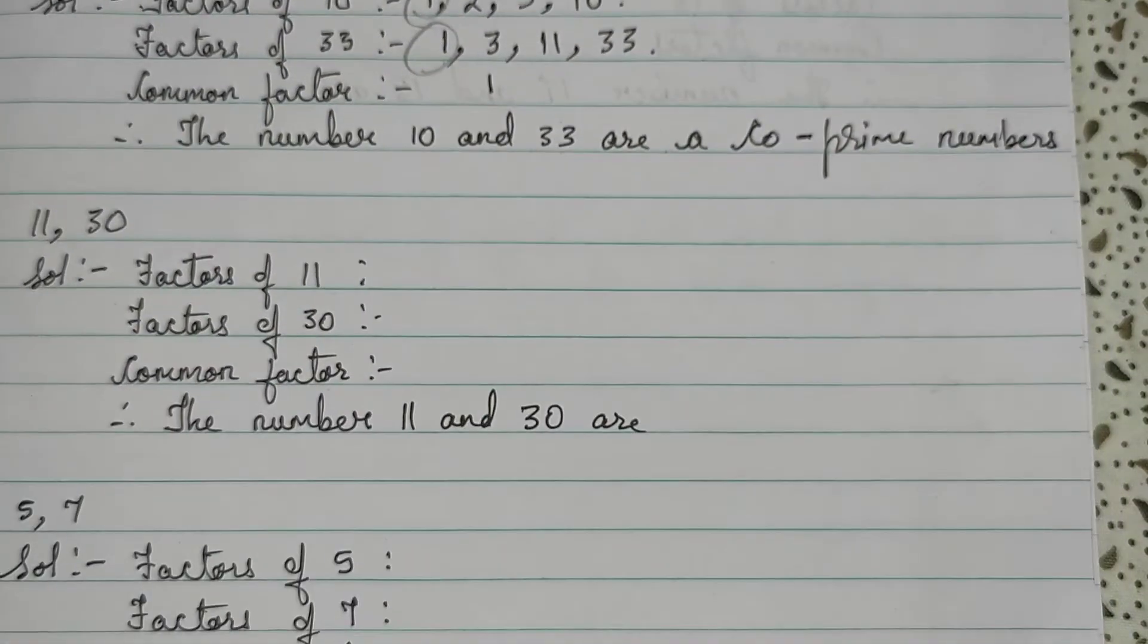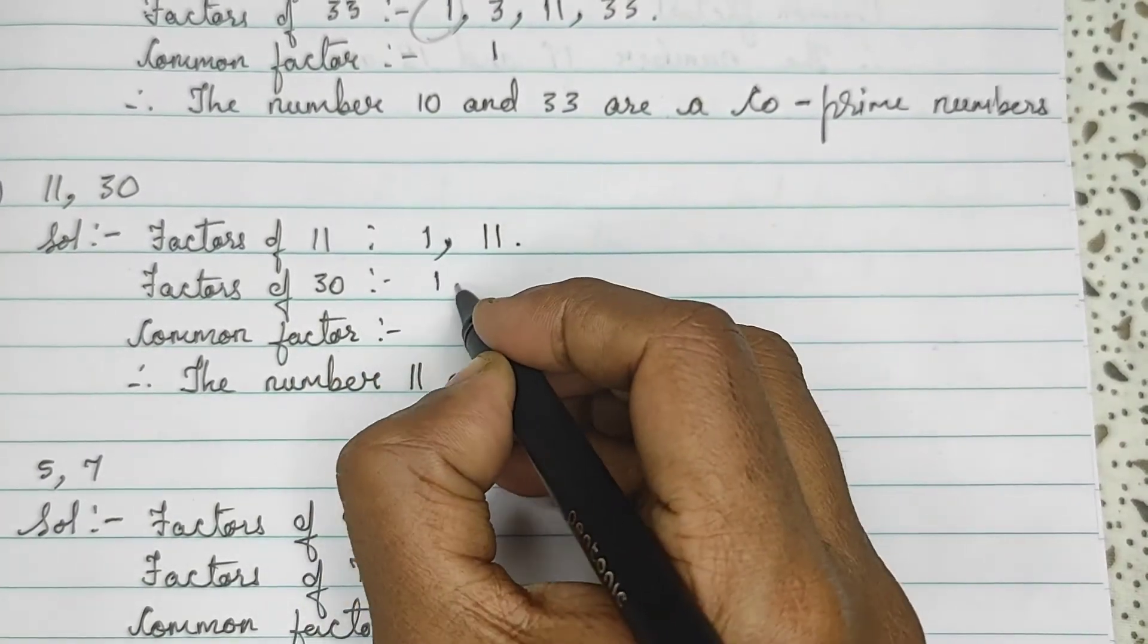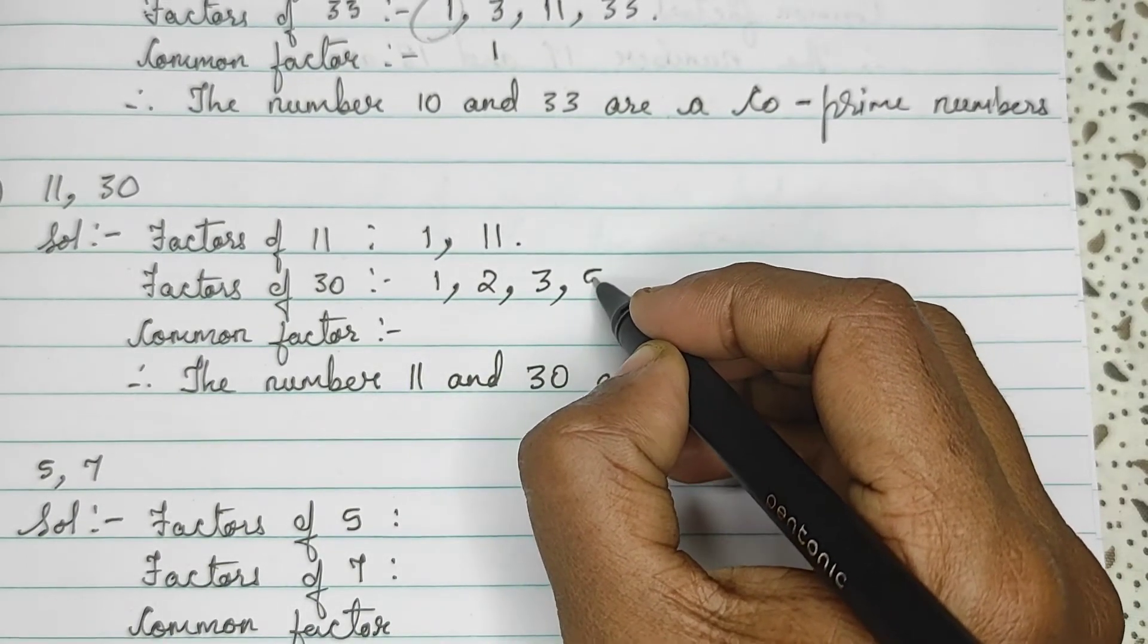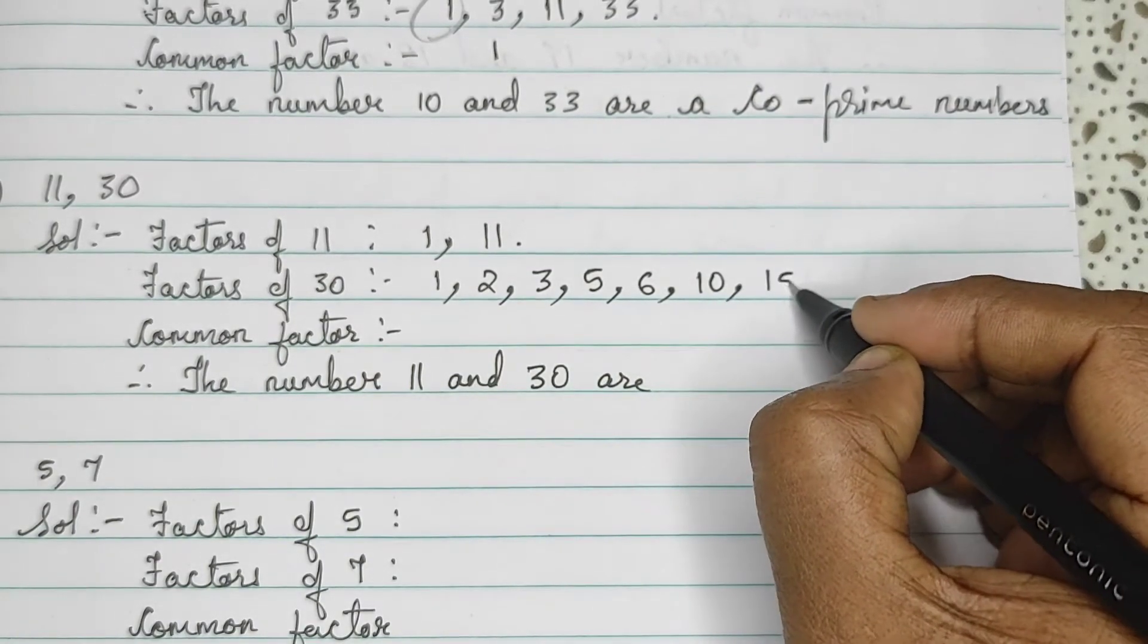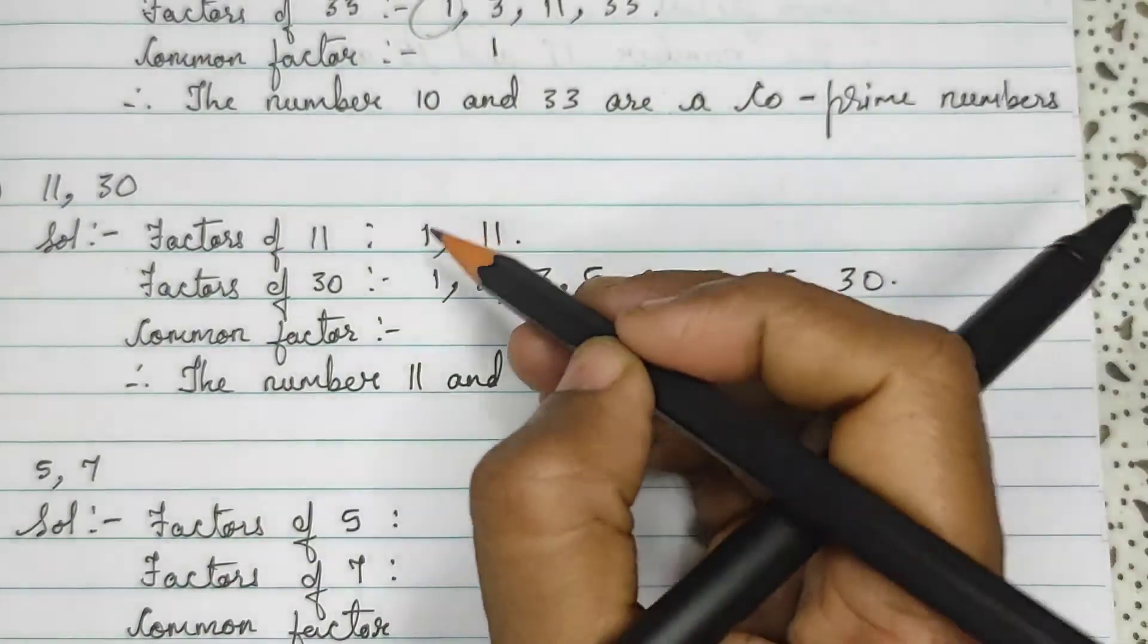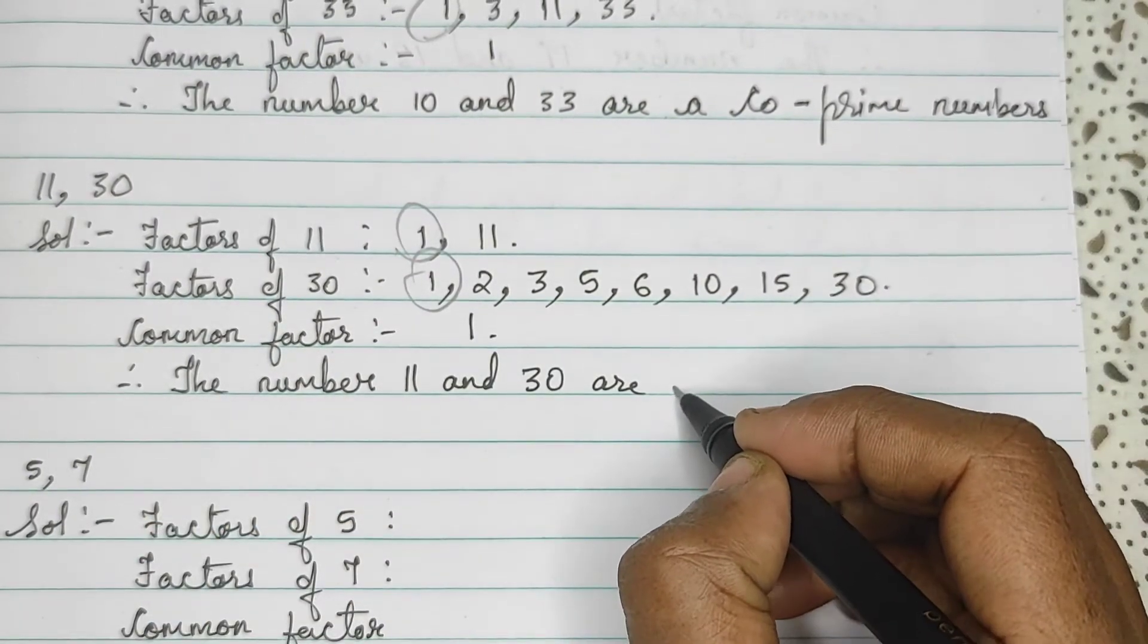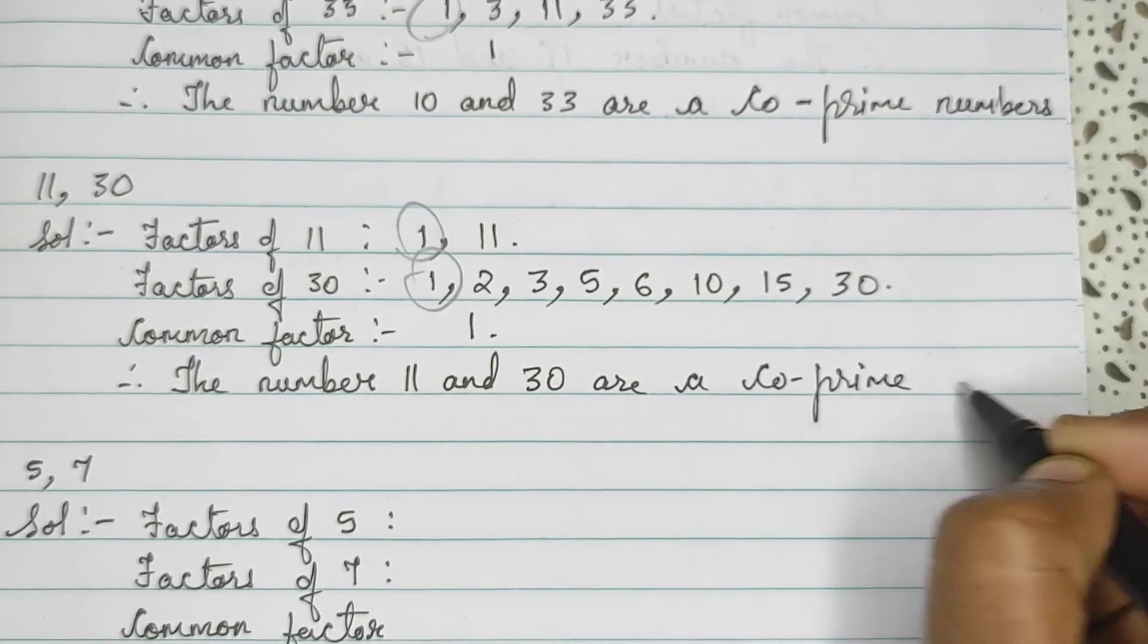Now, 11 and 30. So, 11 is divisible by 1 and 11. 30 is divisible by 1, 2, 3, 5, 6, 10, 15, and 30. So, here common factor is only 1. So, the numbers 11 and 30 are co-prime numbers.